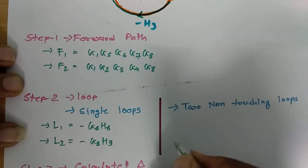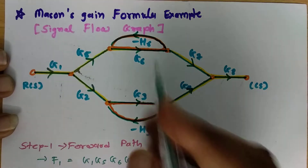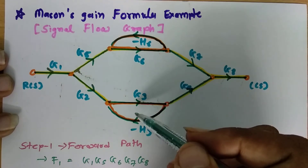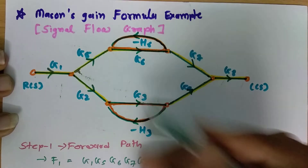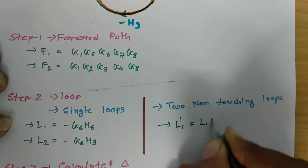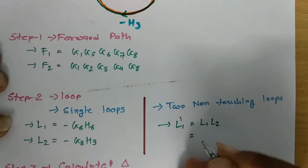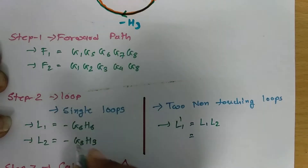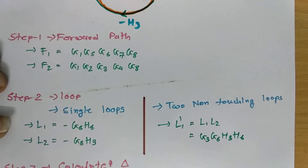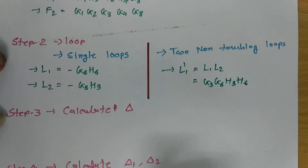Now we identify non-touching loops. Looking at the signal flow graph, these two closed loops — L1 and L2 — are non-touching to each other. The product of the non-touching loop pair, denoted L1', equals L1 · L2 = G3 · G6 · H3 · H6.